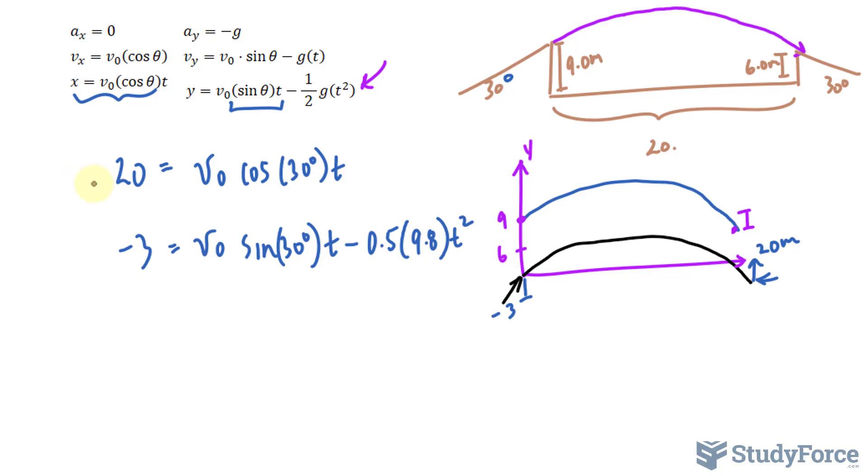So I would like to solve these two equations simultaneously, simultaneously meaning that I'll solve for v sub 0 in this equation and substitute that into equation number 2. This is equation number 1. I want to solve for v sub 0. I'll divide both sides by cosine 30 t, where I have 20 over cosine 30 degrees t is equal to v initial.